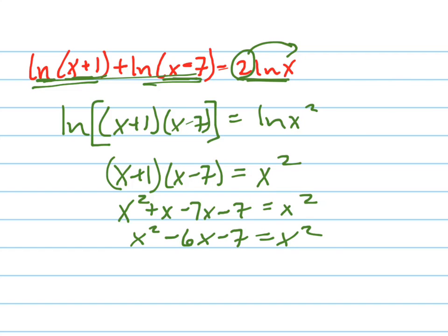So x squared minus that, these x squareds cancel out from both sides. And now I can solve this: negative 6x equals 7, so x equals negative 7 over 6.